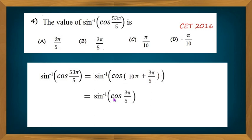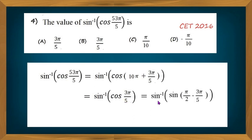This is equal to sine inverse of cos(3π/5). Now it is possible to represent cos(3π/5) in terms of sine. This equals sine inverse of sine(π/2 − 3π/5), because sine(π/2 − x) equals cos x, and that's why cos(3π/5) can be written as sine(π/2 − 3π/5).